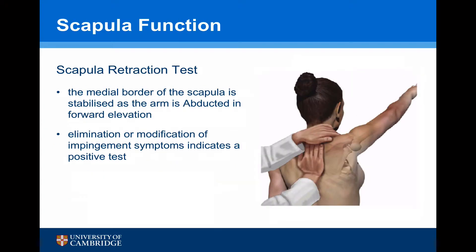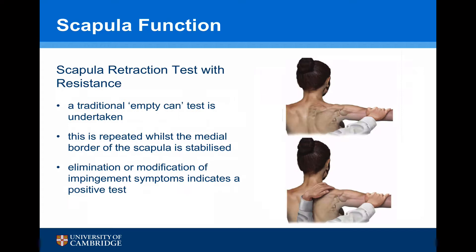The second test I like to use is the scapular retraction test. The examiner once again stands behind the patient and, on this occasion, holds the medial border of the scapula down and stabilises the arm as it is abducted forward in elevation. Elimination or modification of the impingement symptoms indicates a positive test. The scapular retraction test with resistance is essentially the same test whilst undertaking an empty-can test. A traditional empty-can test is undertaken first to see whether there is any evidence of impingement pathology, then repeated whilst the medial border of the scapula is stabilised. Once again, elimination or modification of impingement symptoms indicates a positive test.